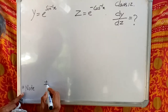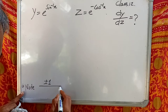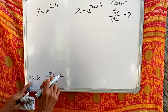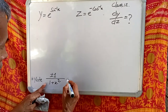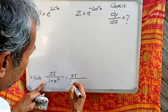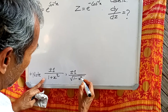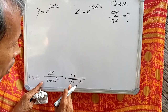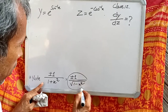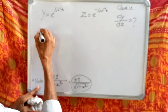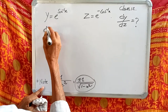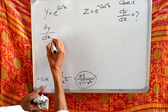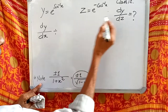Note: d/dx of tan inverse x and d/dx of cot inverse x equals plus or minus 1 by root over 1 plus x squared. And d/dx of sin inverse x and d/dx of cos inverse x equals plus or minus 1 by root over 1 minus x squared. This is applicable here.